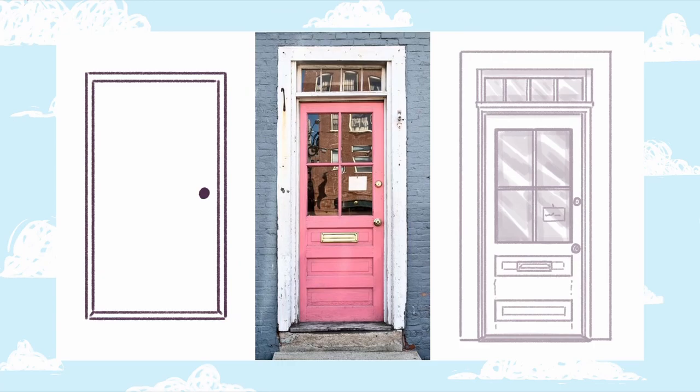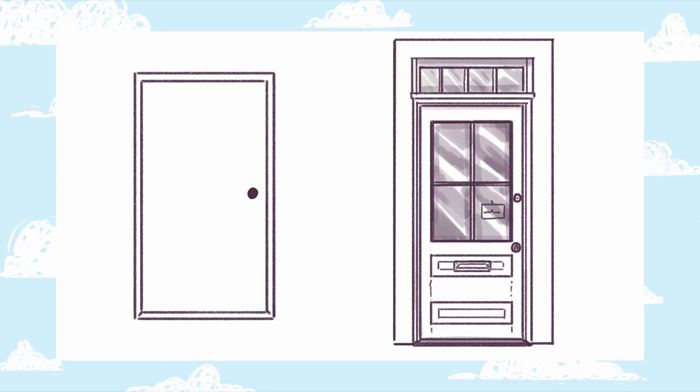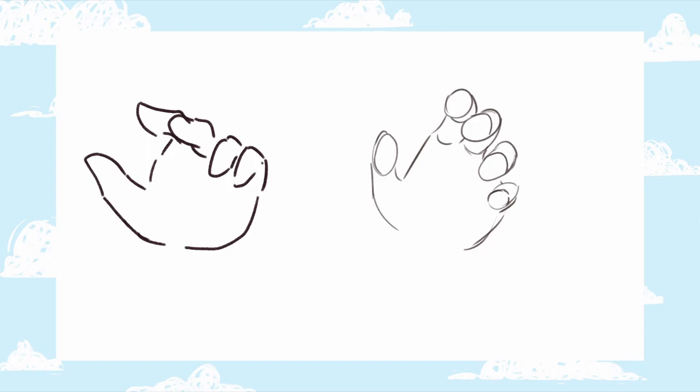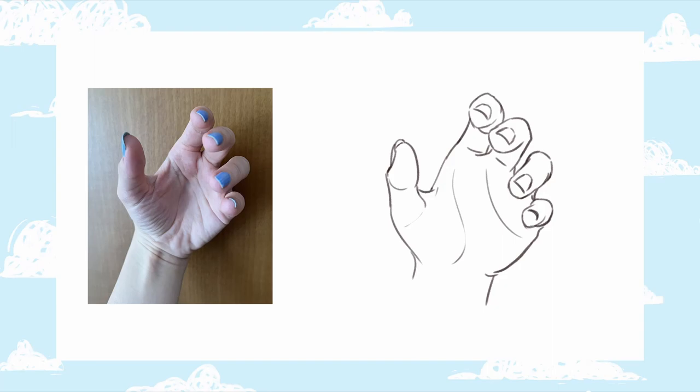It's hard to remember other details because our brain tends to simplify things and sometimes even distorts them. This is the moment we can bring in our reference. Now we can see details such as the lock, the letterbox, different window sizes, the door frame, the wood pattern, and so on. These details make your door more believable and interesting to look at. The same goes for anatomy — it's very hard to draw hands and bodies that don't look odd. Of course, if you learn how to simplify things into basic shapes, it's easier to recreate a pose from memory, but using a reference will help you add those details that make everything believable.